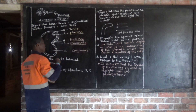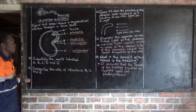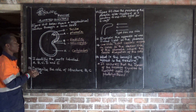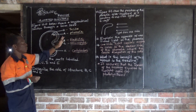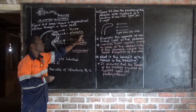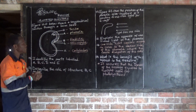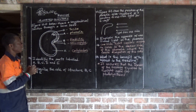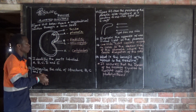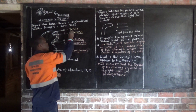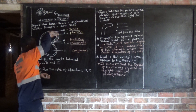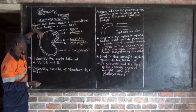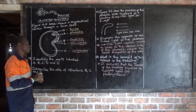Then we have our broom ray. The function of the broom ray is to develop into the shoot system after germination. The tester's function is just to protect the inner parts of the seed — it has a protective function. So the broom ray develops into the shoot after germination, and the radical develops into the root after germination.